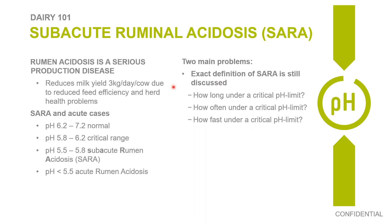There is no exact definition of when acidosis occurs — it's still under research. As a rule of thumb: between 6.2 and 7.2 is normal; between 5.8 and 6.2 is a critical range; between 5.5 and 5.8 is subacute rumen acidosis (SARA); and below 5.5 is really acute and harmful to the animal. But the exact value isn't always the most important thing — the daily amplitude not getting too high is equally important.